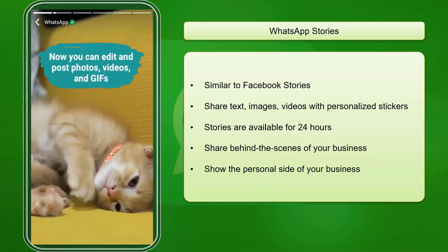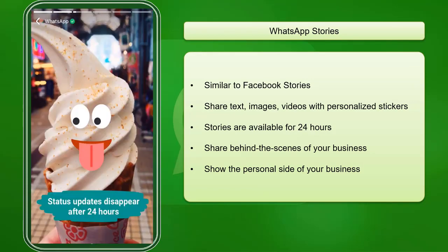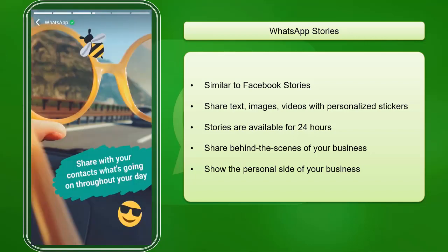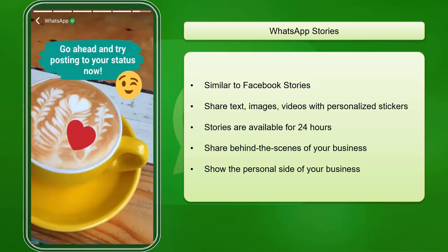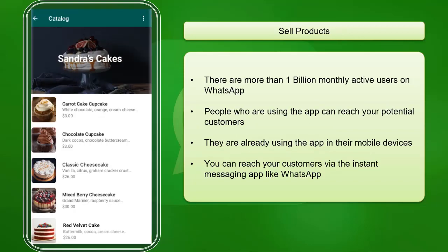Use WhatsApp Stories. Similar to Facebook Stories, WhatsApp has a feature where you can share text, images, or videos with personalized stickers or text. It can be available for 24 hours. Stories are a great way to share your brand's behind-the-scenes to show the personal side of your business with your customers. Business owners must use WhatsApp Business in selling their products.